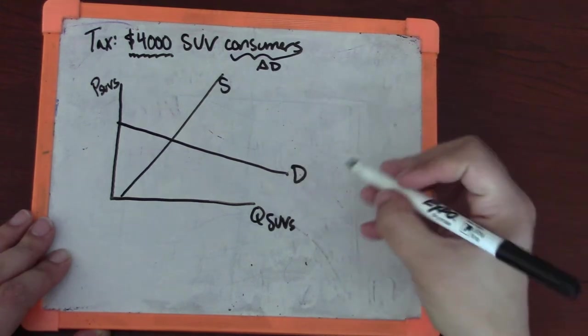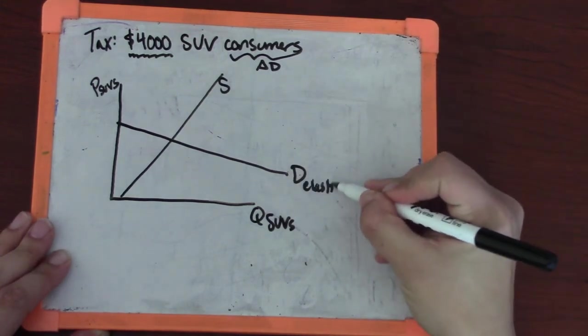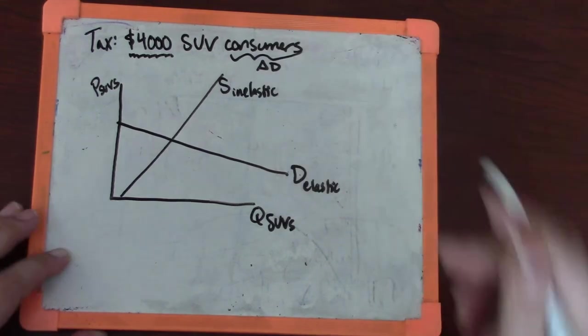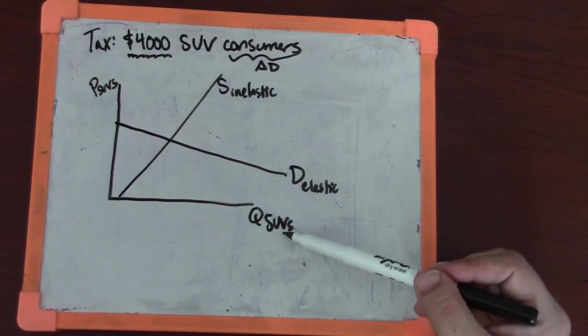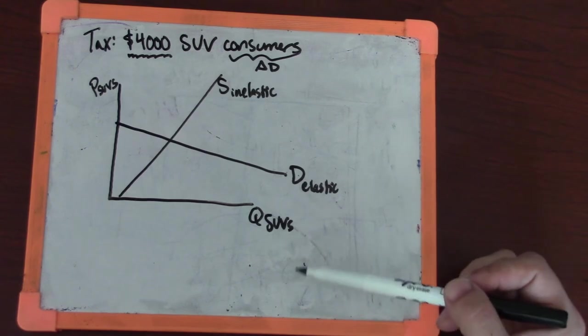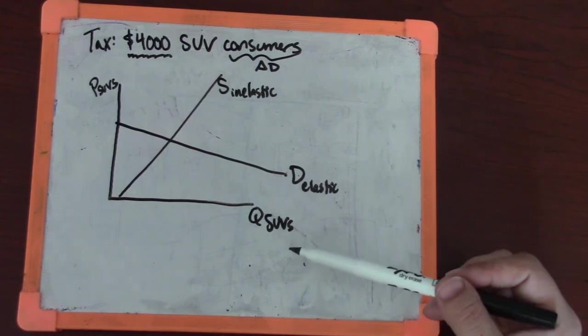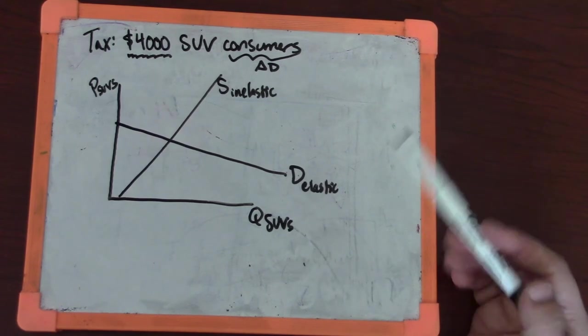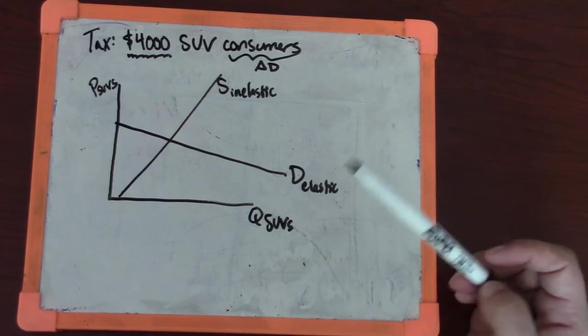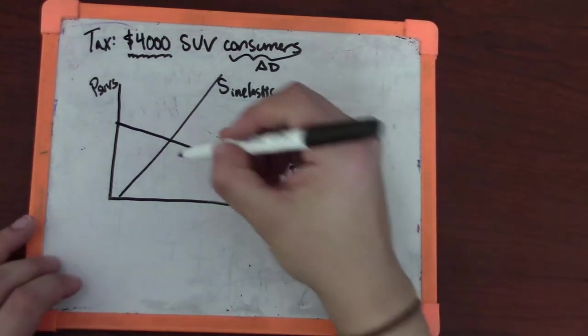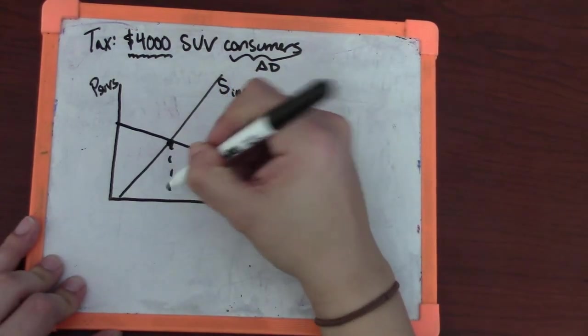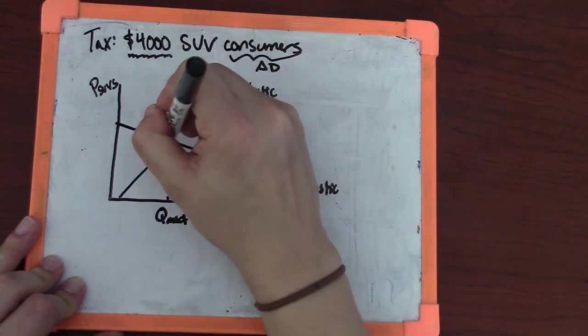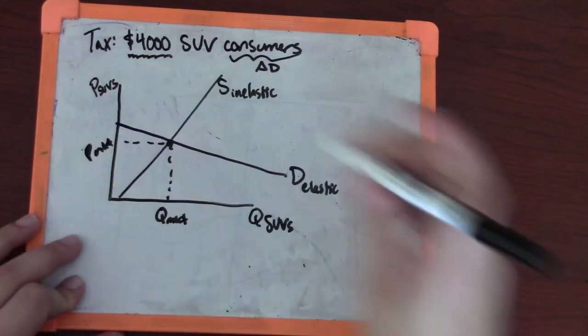I'm going to model demand as being relatively elastic. That's because an SUV is a large chunk of your budget. There's quite a few substitutes: you could get a smaller vehicle, you could walk or bike or get a used car. A new SUV has a lot of substitutes and it's a big chunk of your budget, also a luxury good. What the market would do on their own is this quantity and this price.